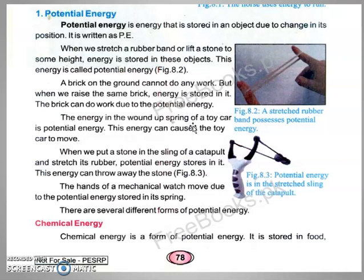The energy in the wound-up spring of a toy car — when you wind the spring of the toy car, it starts to move. This energy can cause the toy car to move. The stored energy makes it run, and as the energy is finished, the toy car will stop. To make it move again, you need to wind up the spring again.